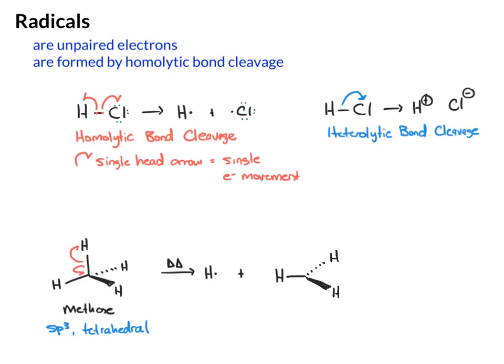But now because we've lost that hydrogen, that fourth group, this is now sp2 and trigonal planar. Additionally, what do we know about sp2 hybridized carbons? There's a p orbital. So I want to put a p orbital on this carbon and put the radical in that p orbital.